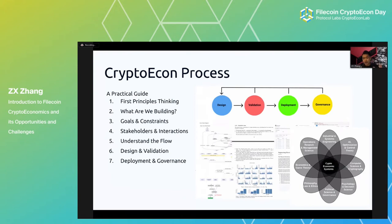We also pioneer and champion this crypto-econ process: design, validation, deployment, and governance. This is something we apply systematically in thinking about new problems — how do we model them, how do we design around them, and how do we know our design is good? Crypto-econ is really interdisciplinary, as we can see from this diagram, and we are looking for collaborators from different backgrounds and experience.